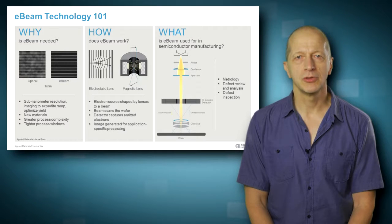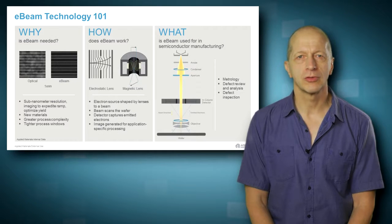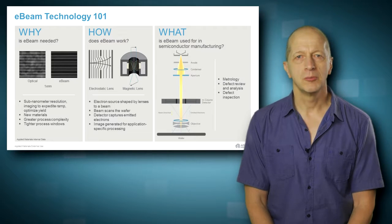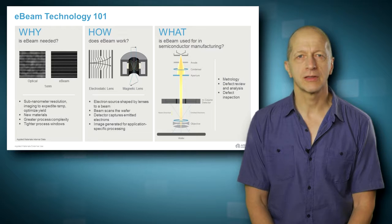An e-beam column uses a focused beam of electrons to generate an image. The electrons are emitted from a source. Magnetic and electric fields act like light optical lenses or mirrors and shape, focus and deflect the beam.